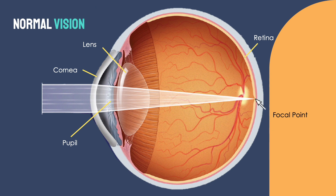In normal vision, light rays are first bent by the cornea, traveling through the opening known as the pupil, where the rays are then bent again by the lens, so that they will come together and reach a focal point directly on the retina.